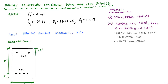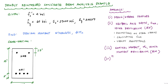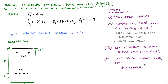Once you have the neutral axis depth, you can apply moment equilibrium to calculate the nominal moment. Last but not least, you calculate the design moment strength, phi MN, which requires determining the strength reduction factor phi. That depends on the strain in the steel. I'm doing all my calculations in accordance with the ACI 318 building code.